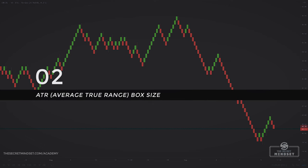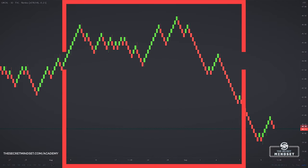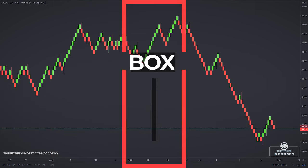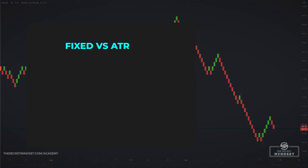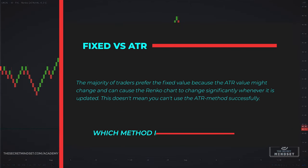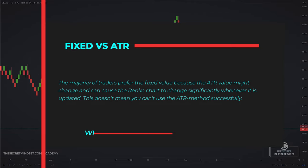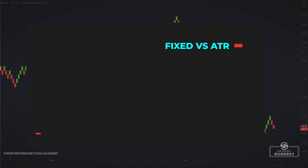The second approach involves the average true range for brick sizes. The advantage of this method is that it factors in changes in price volatility. A typical value is the 14-period ATR, so the brick size is based on the ATR value at the time the chart is created. If the ATR value changes the next day, the new ATR value will be used to set the brick size. I prefer the fixed value because the ATR value might change and can cause the Renko Chart to change significantly when updated — though I know a few traders that use the ATR brick size successfully.